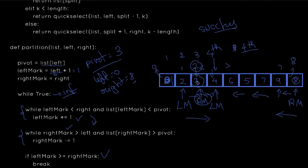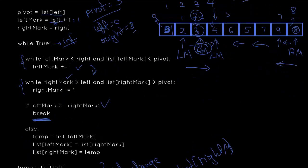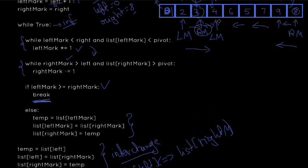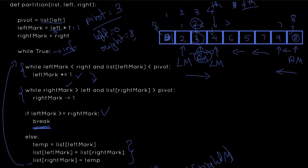An important edge case: if the left mark and right mark did not cross each other, you would need to swap the right mark and left mark values to preserve the partitioning property — left side less than pivot, right side greater than pivot. You then continue the while loop until the left mark and right mark reach the same point or cross, and that's the entire essence of the partition function — the basis of both quick sort and quick select.